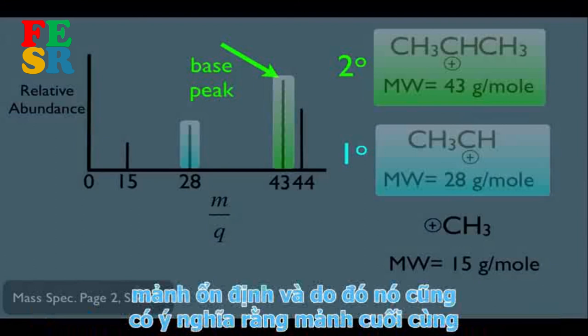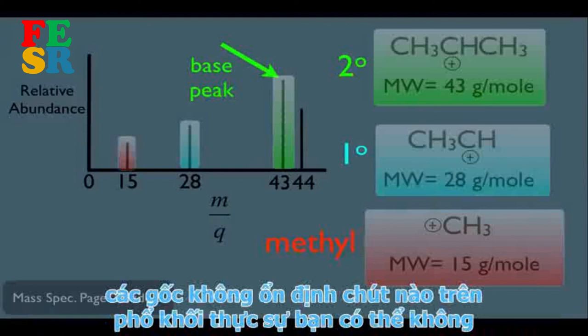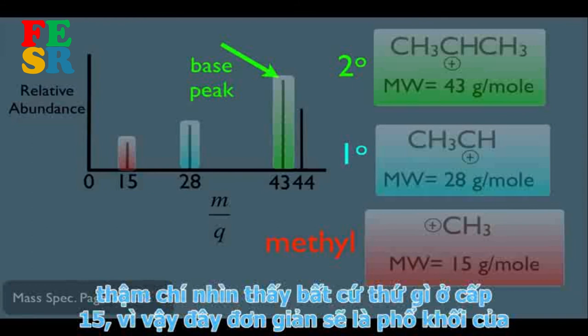The base peak is usually due to the most stable fragment. Conversely, the methyl carbocation fragment is the least abundant, because methyl radicals are not very stable at all. On a real mass spectrum, you might not even see anything at m/z = 15.